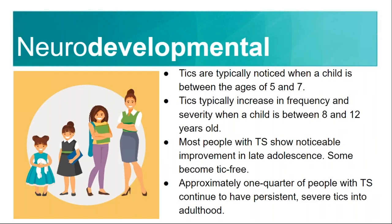Tourette syndrome is definitely a neurodevelopmental disorder. Tics are typically noticed when a child is between the ages of five and seven. Tics will typically increase in frequency and severity between the ages of eight and 12 years old. Most people with Tourette syndrome show noticeable improvement in late adolescence and some even become tick-free. I was not one of those people — I definitely still have Tourette syndrome in my early 40s.